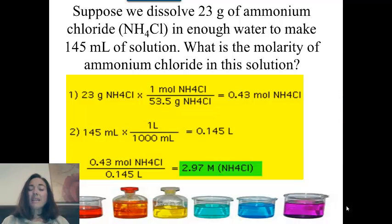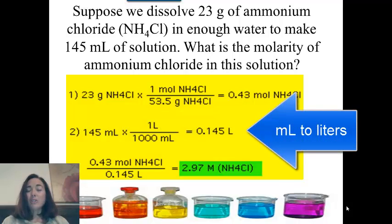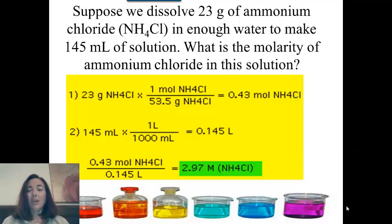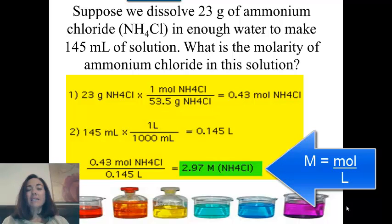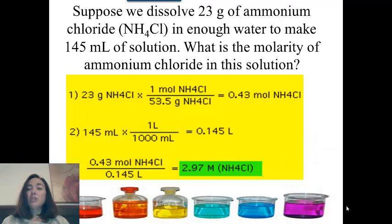The second step is to convert the milliliters to liters. You do that by dividing by 1000, so those milliliters cancel, and you get 0.145 liters. That's the second step that you see here. And then the final step on this slide is to take those two numbers. The moles of solute divided by the liters of solution, and you get 2.97 molar. So this solution is 2.97 molar ammonium chloride.